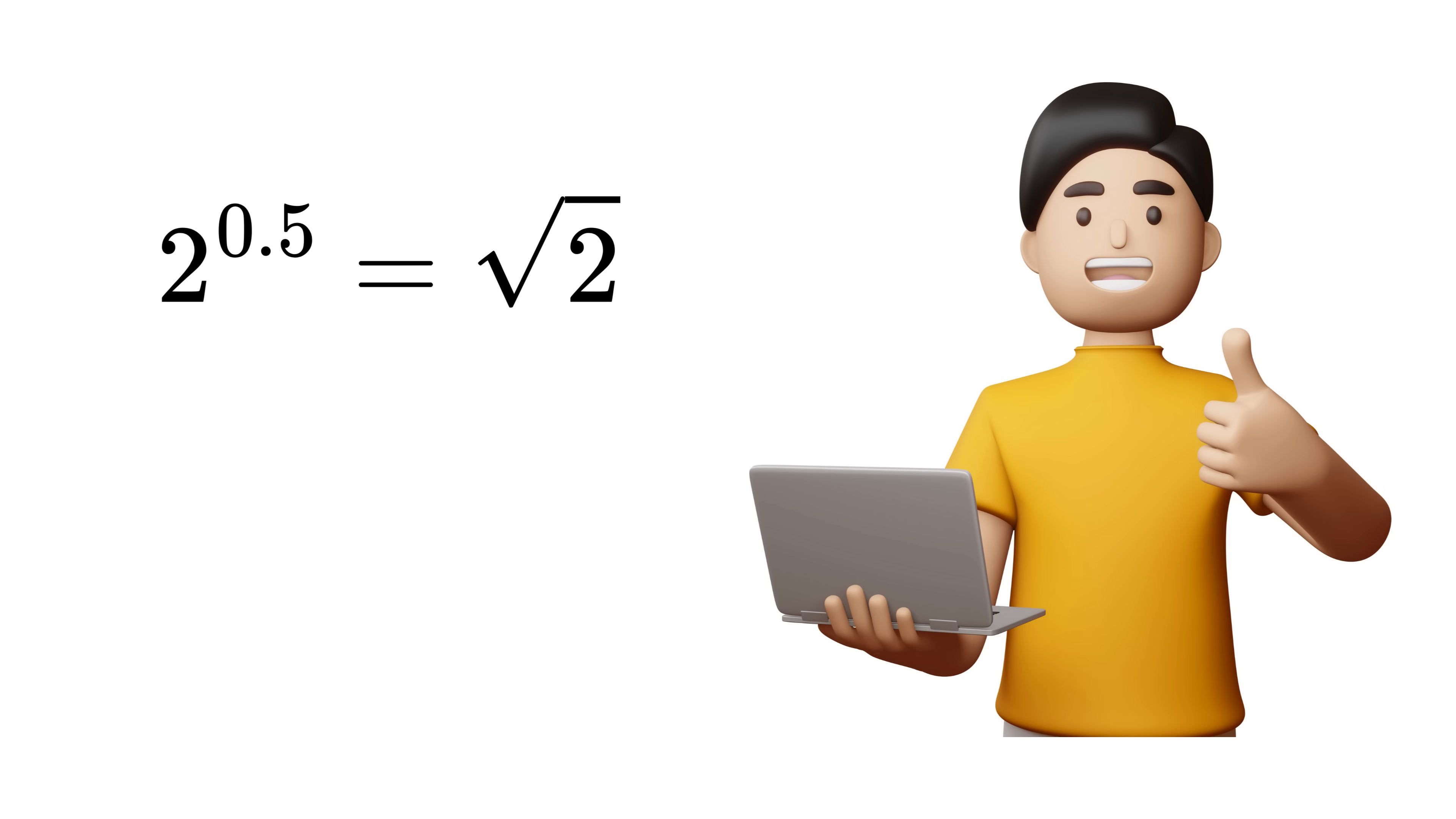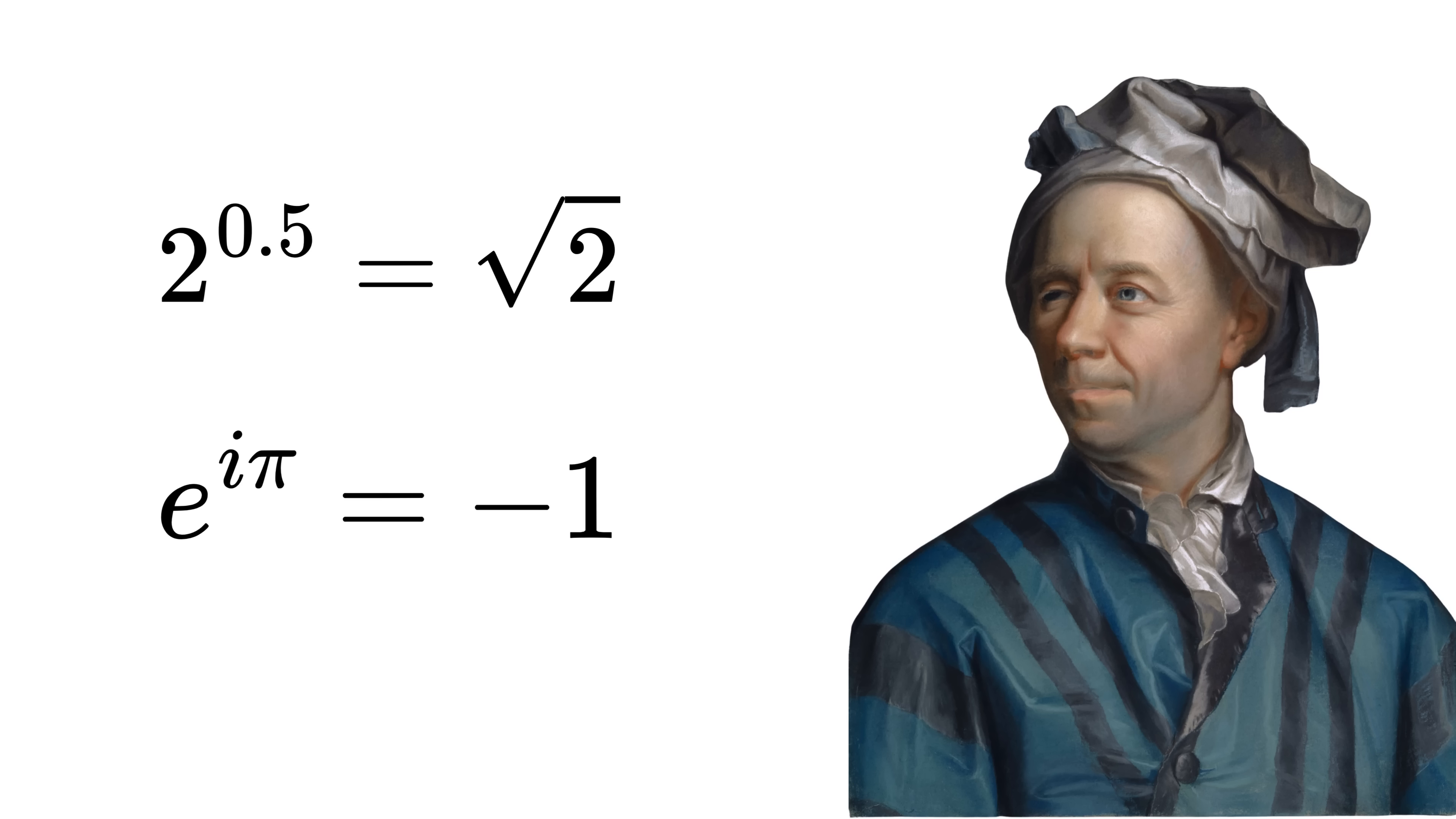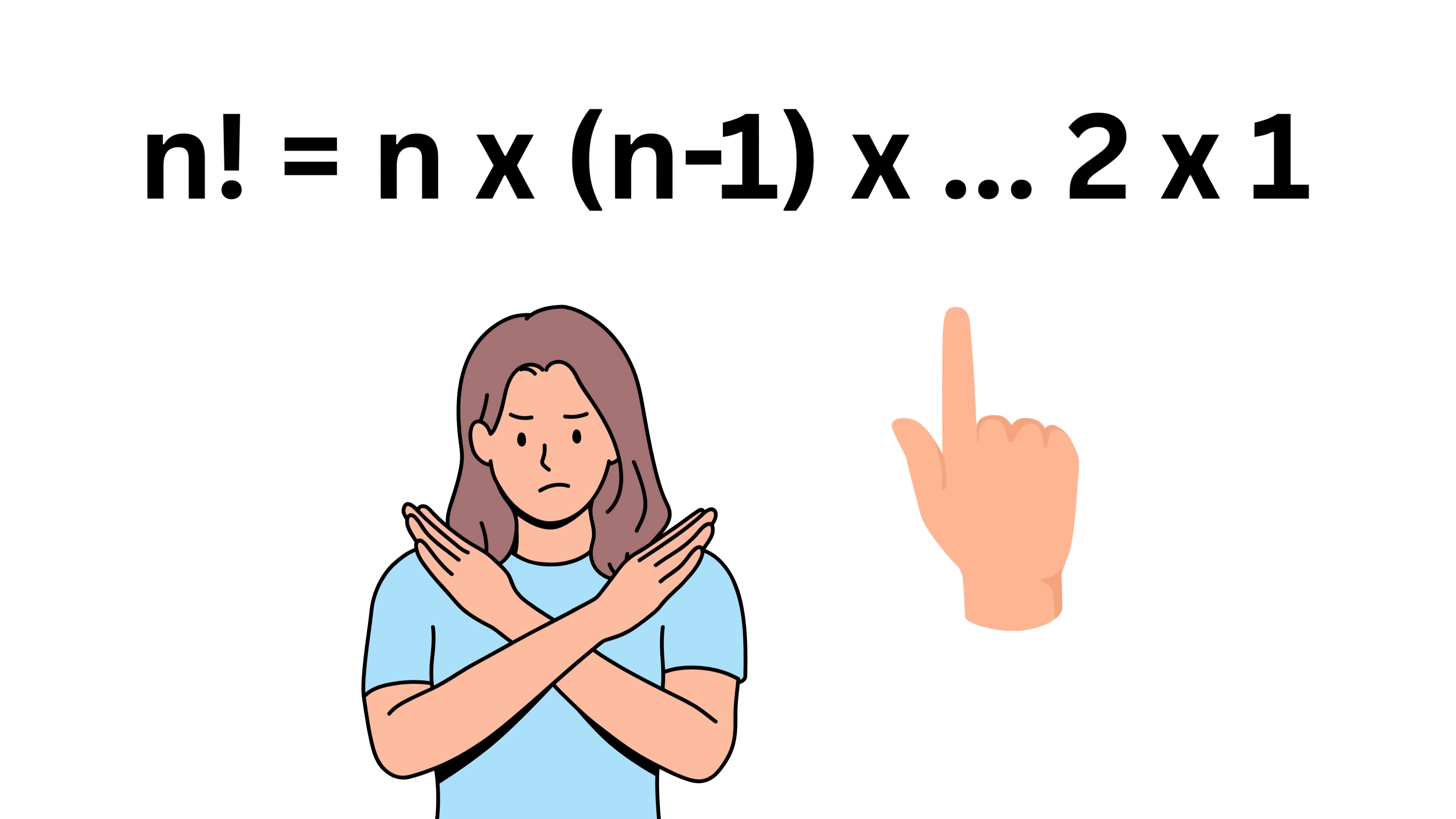And it gets even crazier when we see things like e raised to the power i times pi equals minus 1, the famous Euler's identity. Like how on earth can multiplying something by itself an imaginary number of times give us a real number? This is where we realize we need to go beyond the normal definition of factorial.